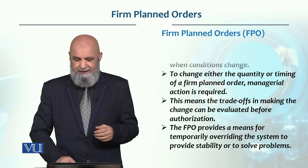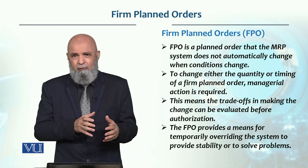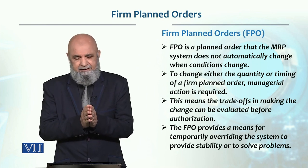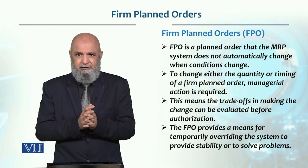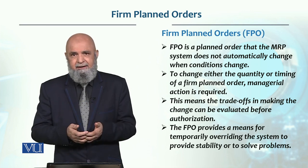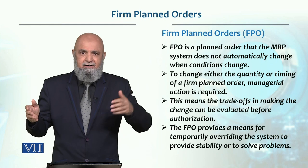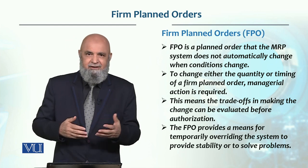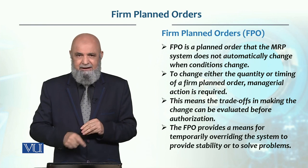What are firm planned orders? When it comes to firm planned orders in the computer system, it will automatically change. For this, there is a managerial decision. For example, the master scheduler can change it, and in this, the general manager of marketing or general manager of production will have a negotiation and discussion. Only then, if it comes to that point, will it be changed.